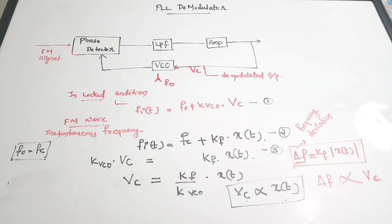The principle is very simple: we just have to lock the loop and we get a voltage proportional to the modulating signal, giving us our demodulated output. This is a very effective way of demodulating FM waves. If you found it useful, please give it a thumbs up, share it with your friends, and subscribe to the channel. Thanks for watching.